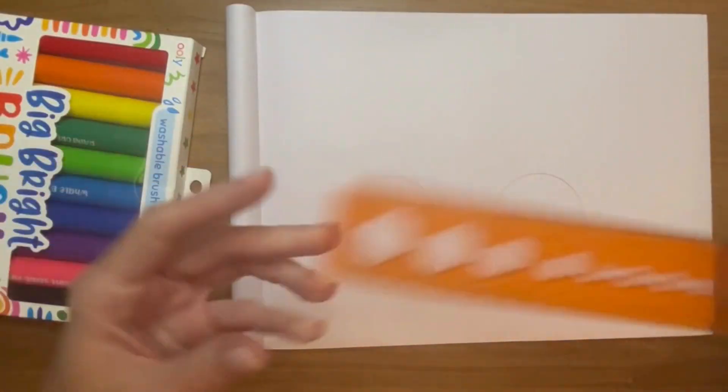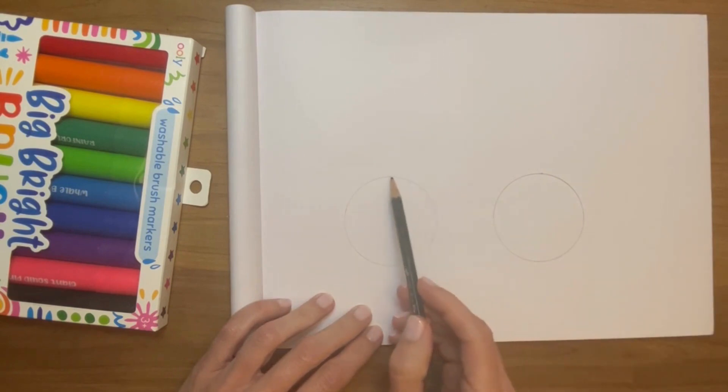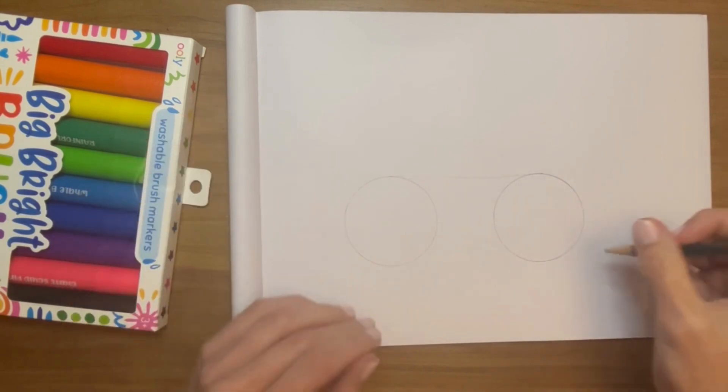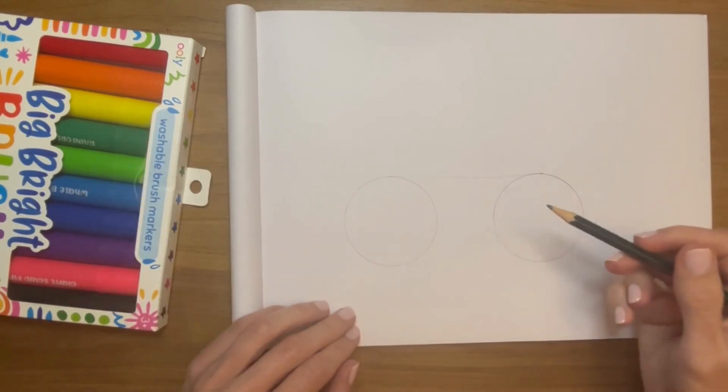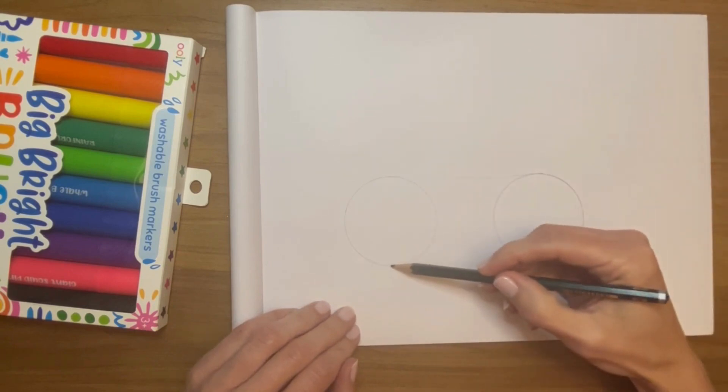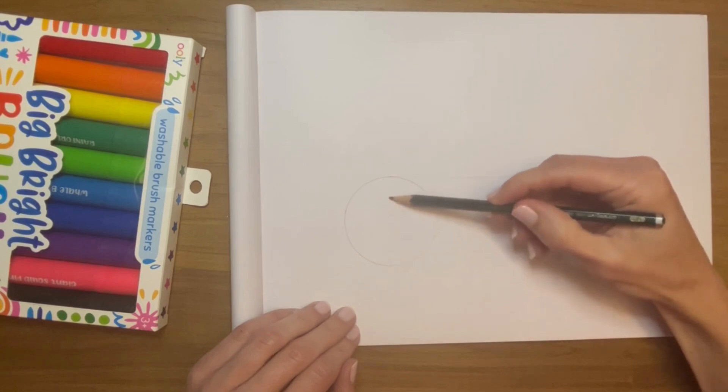I'm going to go from the top of one circle to the top of the other circle and make a slight line. A lot of this is going to get erased and stuff, so it doesn't have to be perfect and you don't have to worry too much about it. Next I'm going to go from the top of the circle to the bottom of the circle and make a line. Same here.